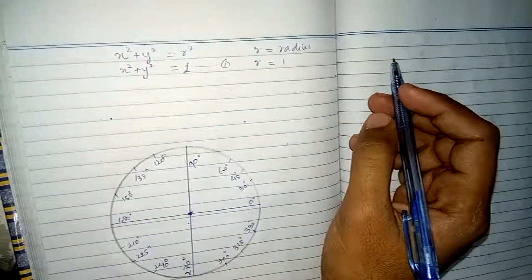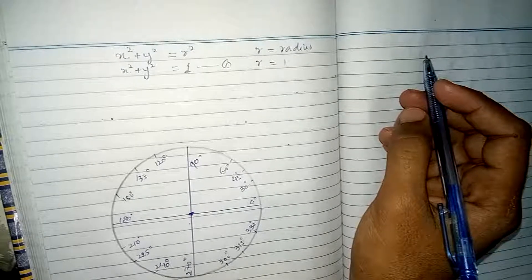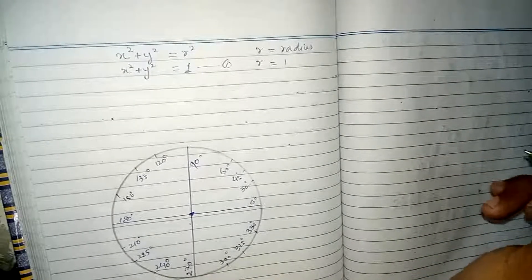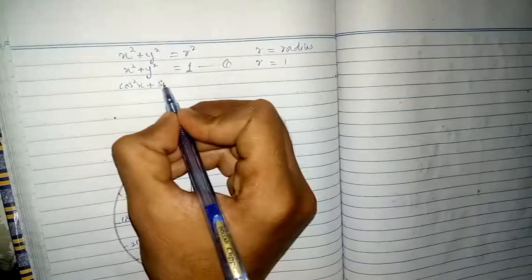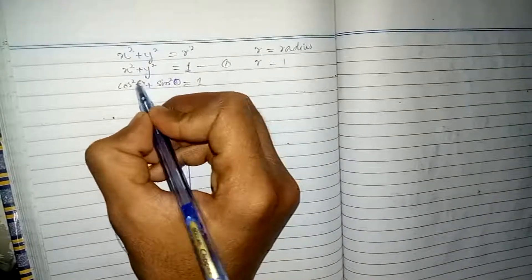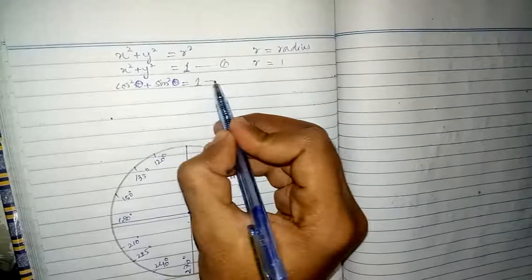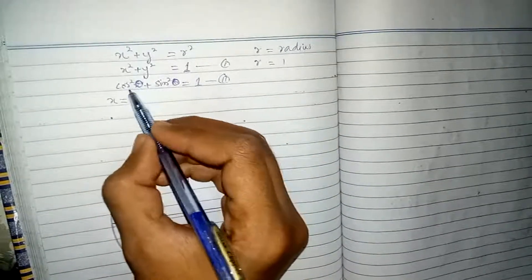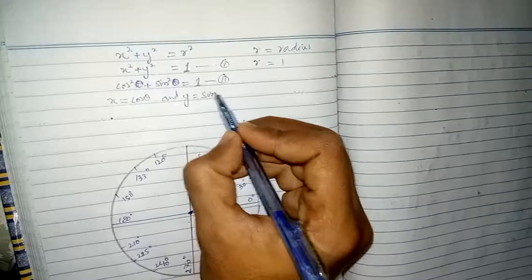If we recall, the basic identity used in our earlier classes was cosine squared theta plus sine squared theta equals 1. I am using theta instead of x here to avoid confusion since we already used x in the circle equation. This is equation number 2. If we compare equation 1 and equation 2, we can see that x equals cosine theta and y equals sine theta.